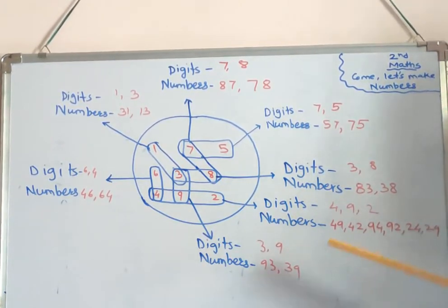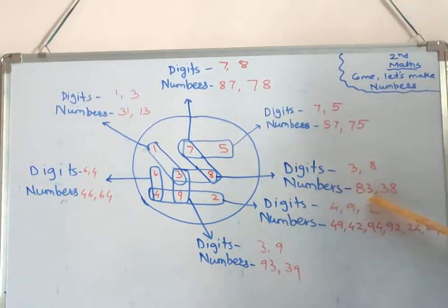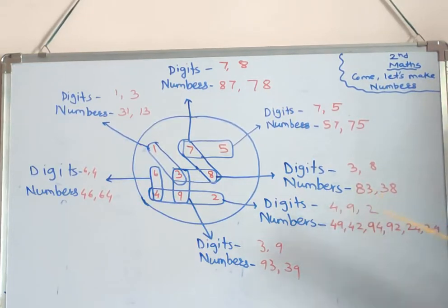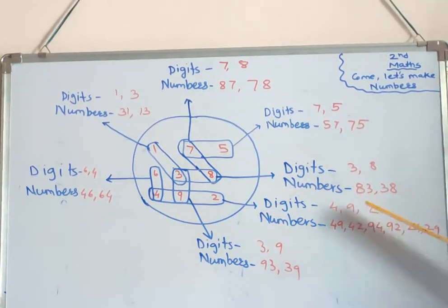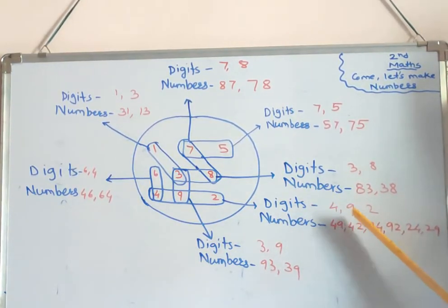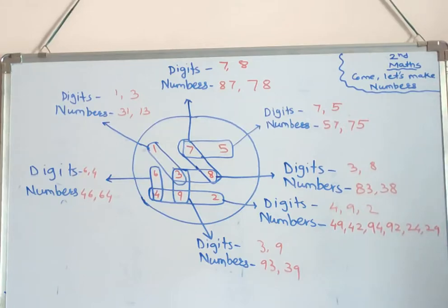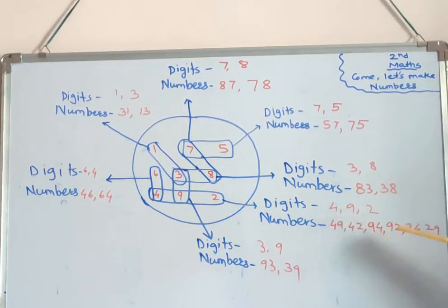Take the remaining two numbers with the first number. Now write the second number nine first, then take the first number four — that gives 94. With the third number two, that gives 92. Now take the third number two first, then write the first number — giving 24 and 29. So the numbers made from digits 4, 9, and 2 are: 49, 42, 94, 92, 24, and 29.